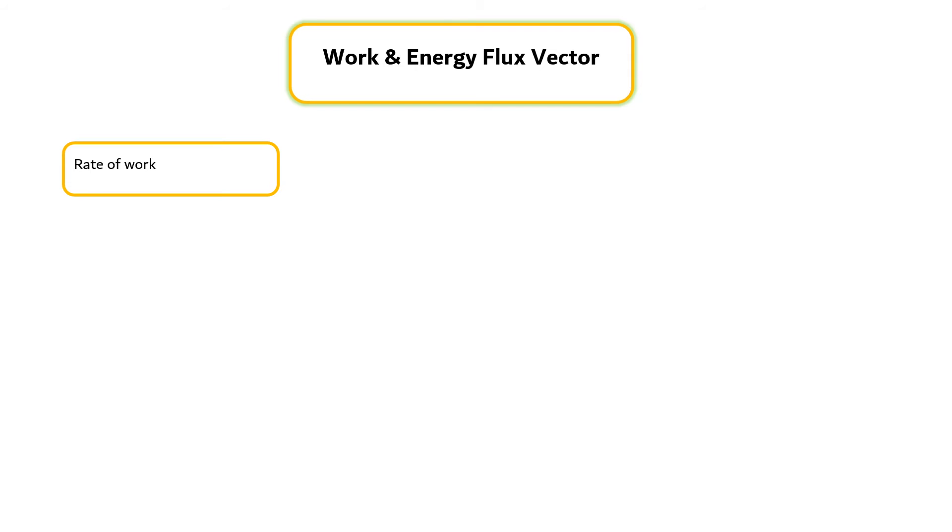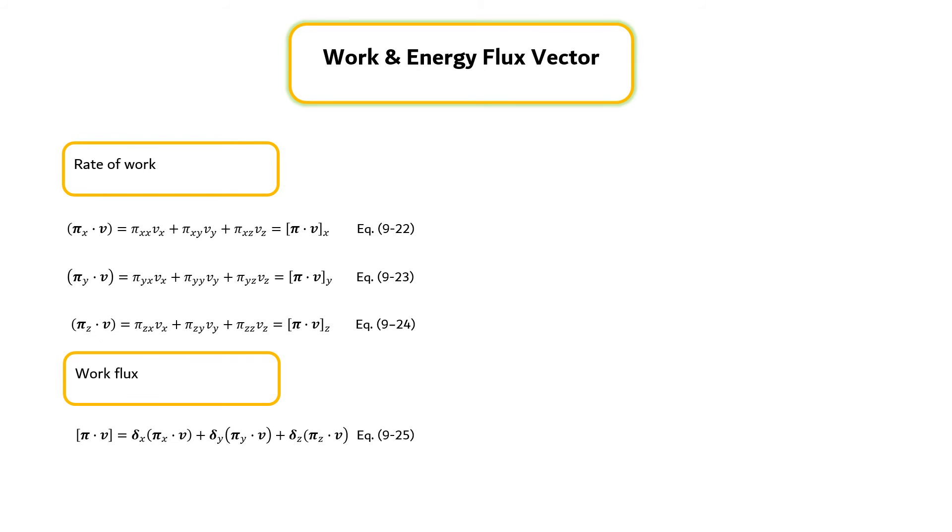Rate of work expressions per unit area for all surface elements are given by equation 9.22 until equation 9.24. When these scalar components are multiplied by unit vectors and added, we can obtain the rate of doing work vector per unit area, also known as work flux, which can be expressed by equation 9.25.